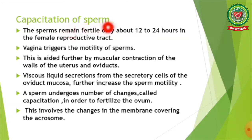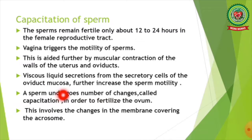Moving on to the next topic: capacitation of sperm. Sperms remain fertile for only about 12 to 24 hours in the female reproductive tract. The vagina triggers the motility of sperms, aided further by muscular contraction of the walls of the uterus and oviducts. Viscous liquid secretions from the secretory cells of the oviduct mucus further increase sperm motility.